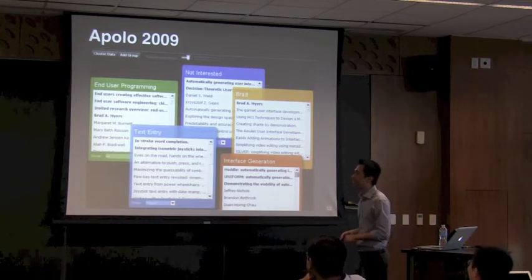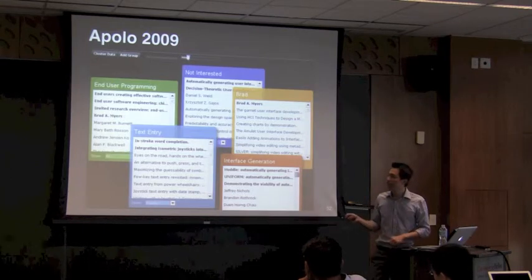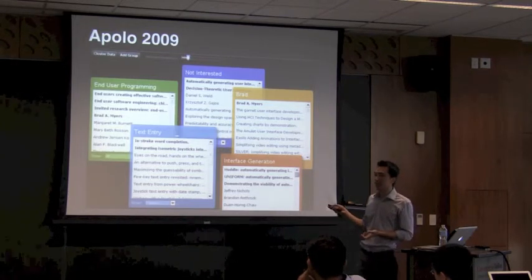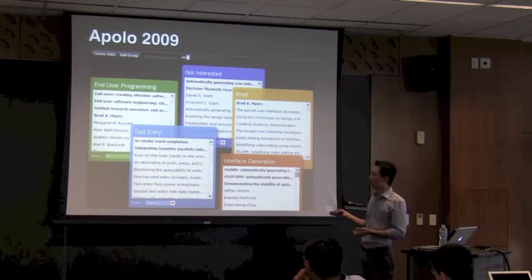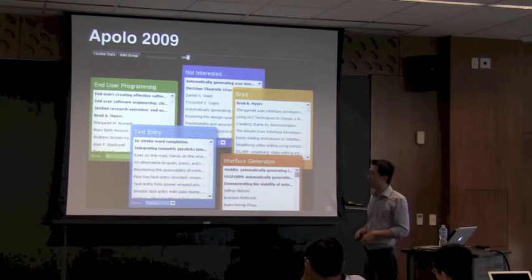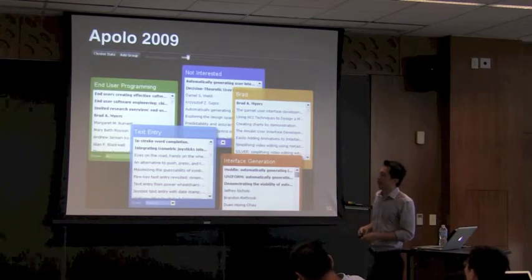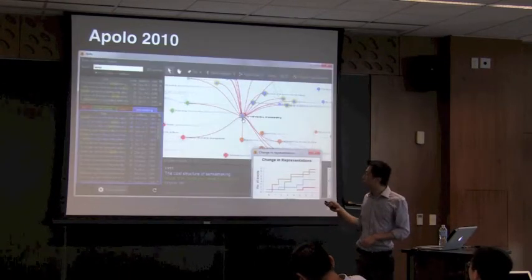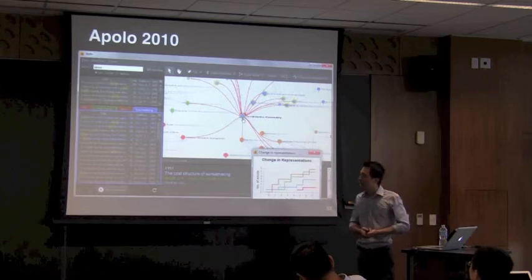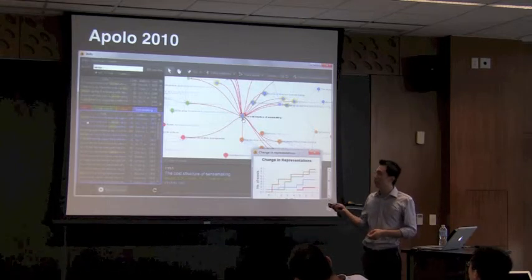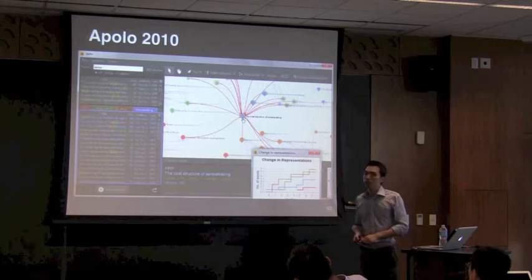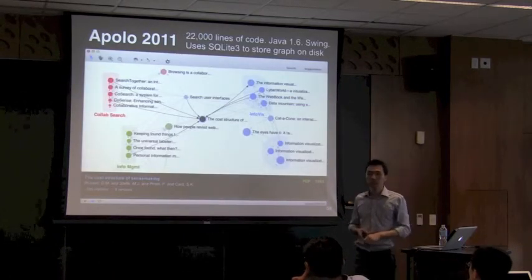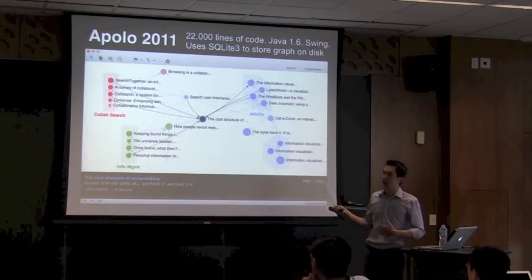Apollo went through several design iterations, starting back in 2009. The first interface was exactly what you'd expect from putting algorithm results directly into an interface — just a long list where each box represents a group. Users had no idea how things were related within a group or between groups. After putting in the visualization, people liked it and stopped using the list — they only used it for ranking. So we removed the list and provided a rank-in-place feature within the visualization.